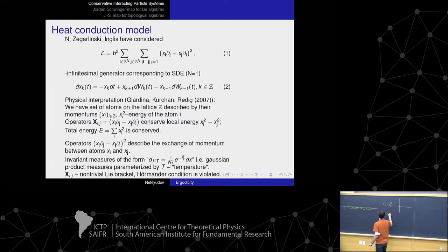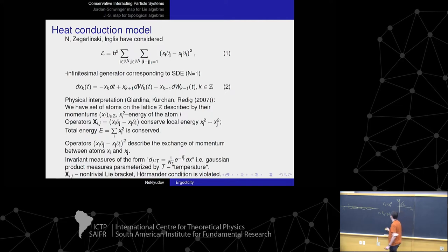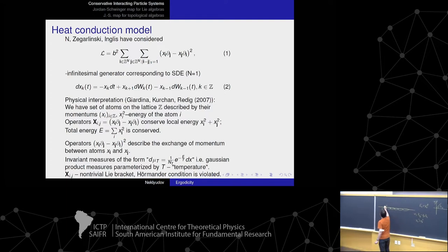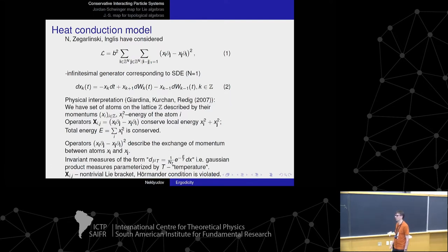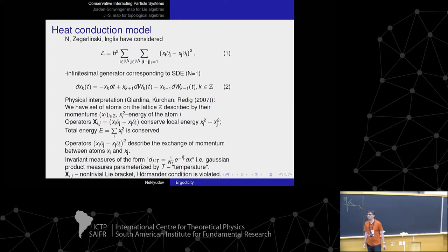If you write it down in polar coordinates, it is just a derivative with respect to the angle between atoms I and J, so it conserves the local energy x_I² + x_J². We will denote it as a circle in our diagrams. This system appears in heat conduction models, and also in a different form in fluid mechanics and in a series of quantum spin chains.